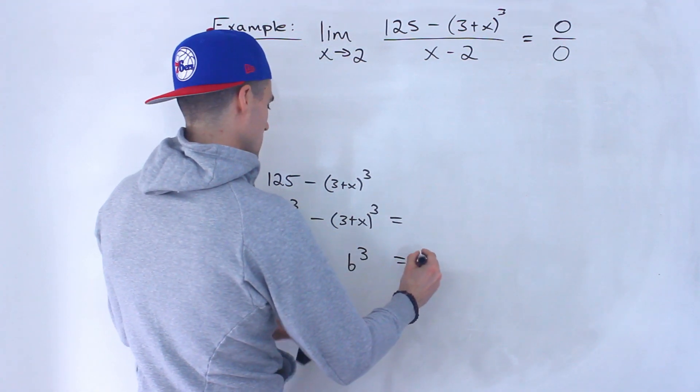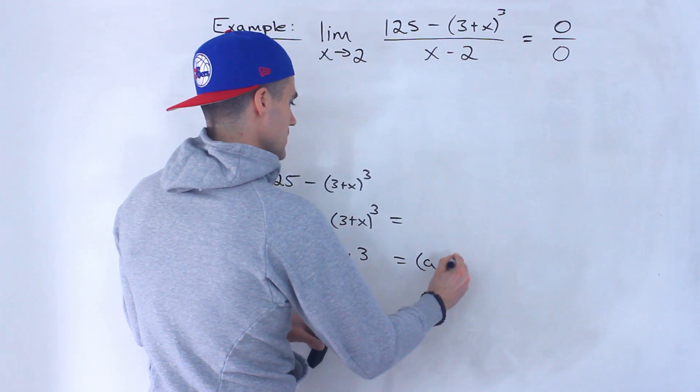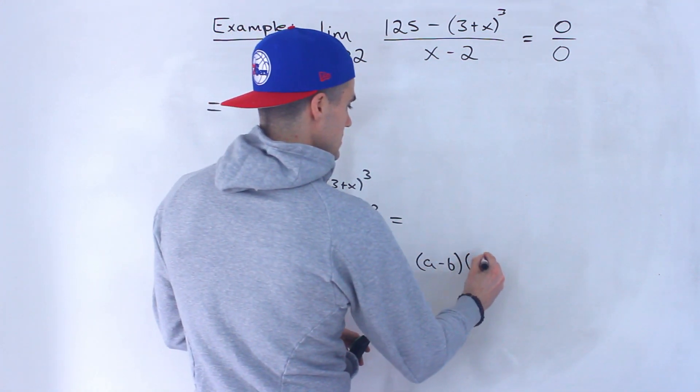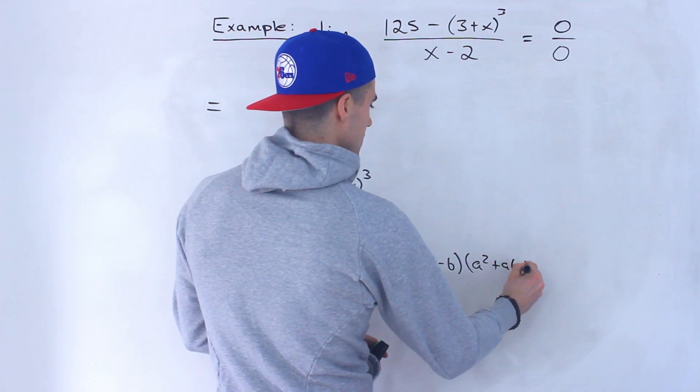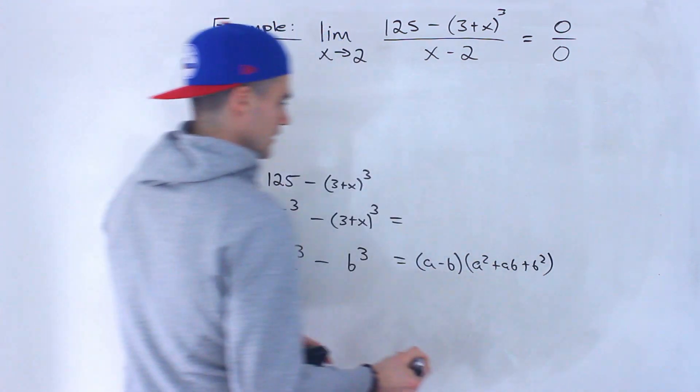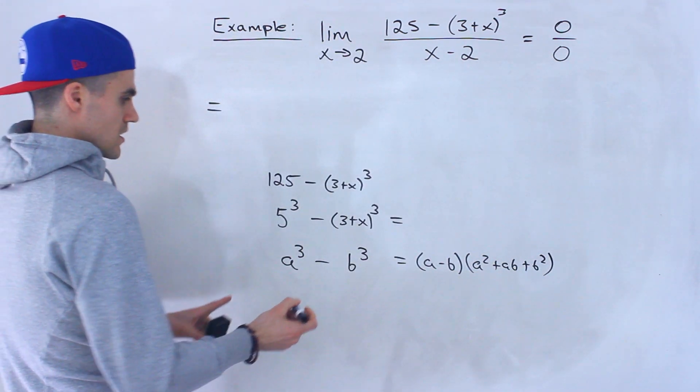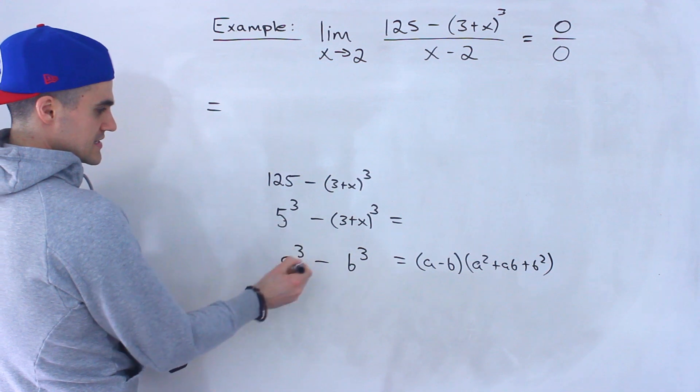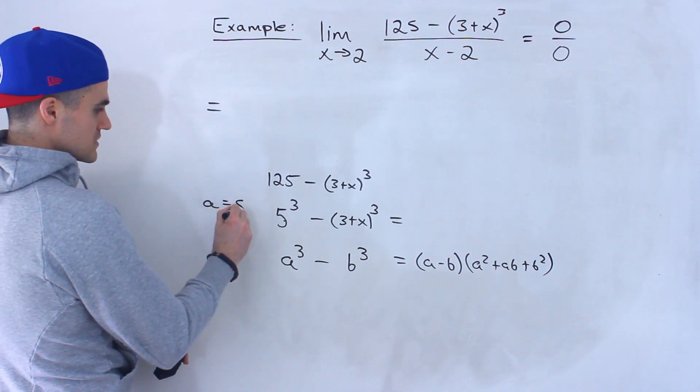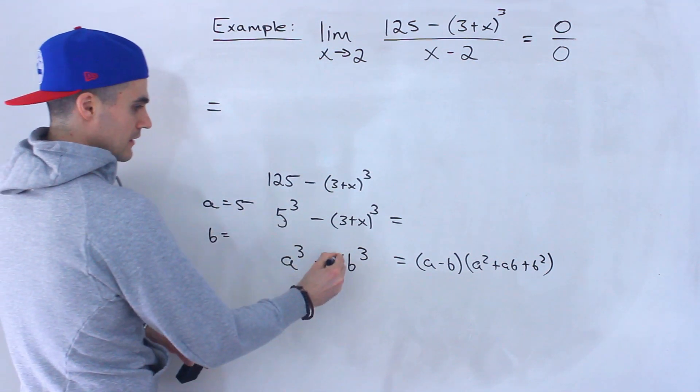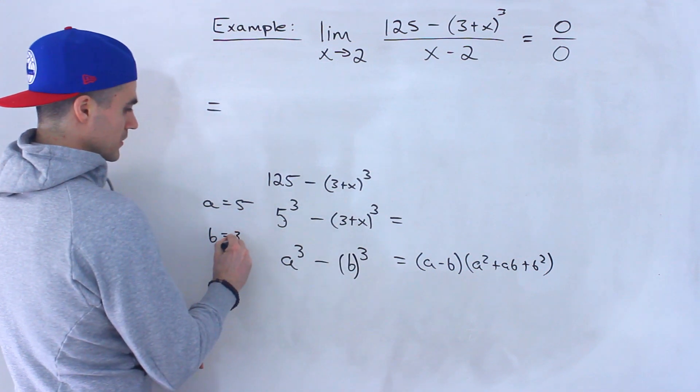a cubed minus b cubed equals (a minus b) times (a squared plus ab plus b squared) like that. So if we relate this to this, notice that the a value is 5 and then the b value is this bracket (3 plus x). So now what we could do